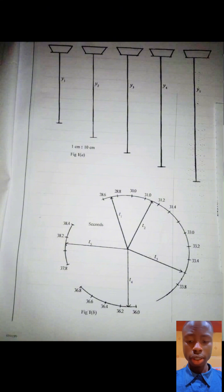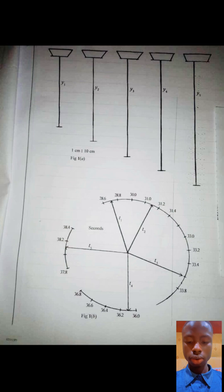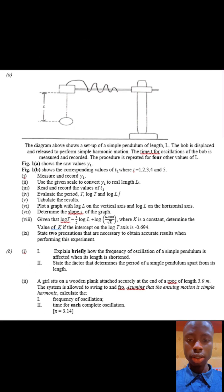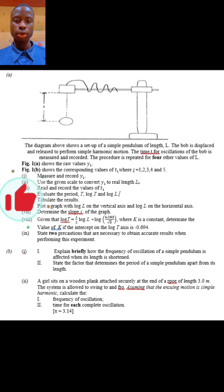Measure and record the values of Y. Use the given scale to convert Y to the real length L. Read and record the values of T. Evaluate the period capital T, log capital T, and log L. Tabulate your results.